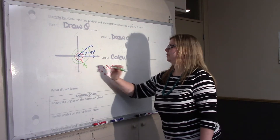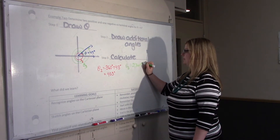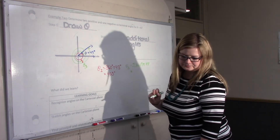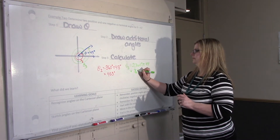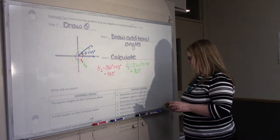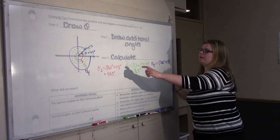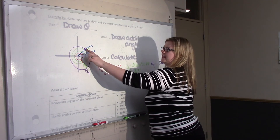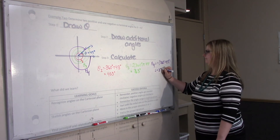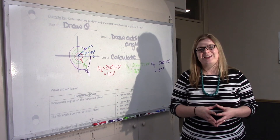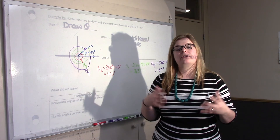Determine two positive and one negative coterminal angle for theta equals 43 degrees. Theta is in quadrant 1 because it's between 0 and 90, so it's about here. Now I want to draw additional angles. The first positive one: go around one full time and then keep going until you stop — call that theta-2. Theta-2 is one full rotation plus 43 degrees, so 403 degrees.